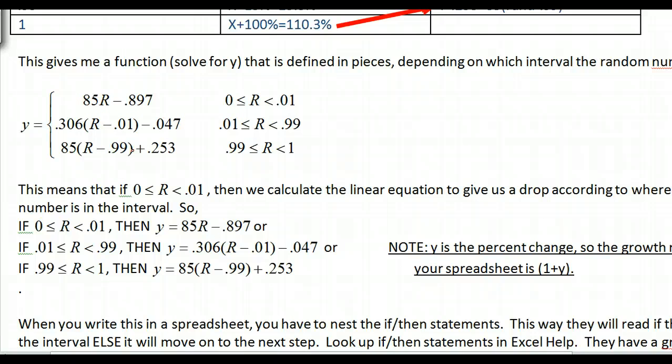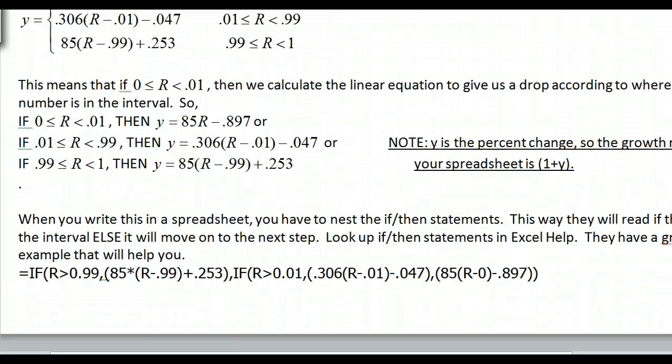I can set up what we call an if-then statement. If my r, my random number, falls in this category, then I'm going to use this equation. To put that into the spreadsheet though and use a little bit of computer language, we have to change this around a little bit. If r is greater than 0.99, and I'm using the top end, then the spreadsheet will use this equation. If this, then we use that equation. That's all this first part does.